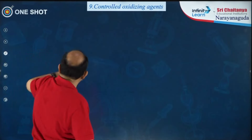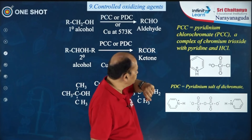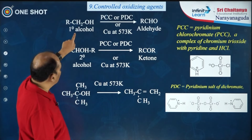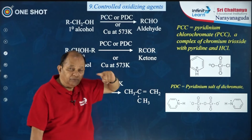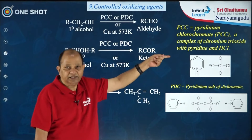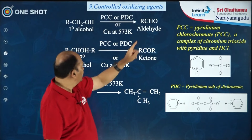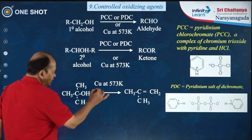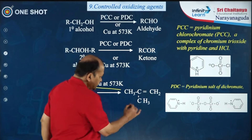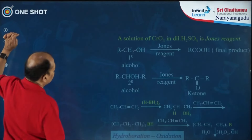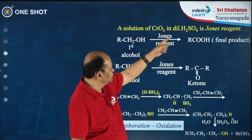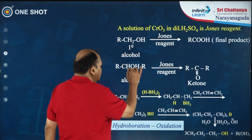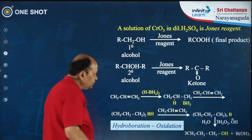The next topic is controlled oxidizing agents: PCC (pyridinium chlorochromate) or PDC (pyridinium dichromate). If you take a primary alcohol, the reaction will stop at the aldehyde stage — with KMnO4 or K2Cr2O7 the final product is acid, but with PCC the product stops at aldehyde. Similarly, secondary alcohol gives ketone. Tertiary butyl alcohol treated with copper at 573 K gives an alkene — an elimination reaction. A solution of chromium trioxide in dilute sulphuric acid is called Jones reagent, which oxidizes primary alcohol to acid and secondary alcohol to ketone.